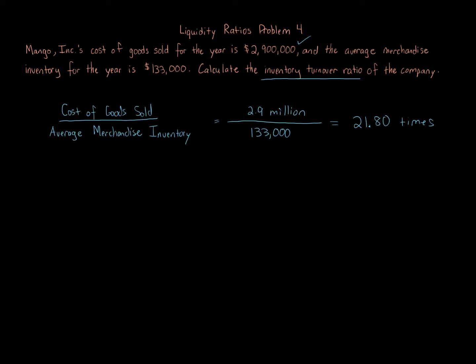The idea is that cost of goods sold — which inventory feeds into — represents inventory going out. The inventory is turned over 21.8 times, which is a good number. You don't want super high inventory relative to a low cost of goods sold; you want to move inventory out quickly, as that improves efficiency and reduces various holding expenses. There'll be another video focusing on days sales in inventory, which is more commonly used in practice, but you still need to know this inventory turnover ratio to get there.